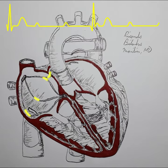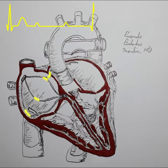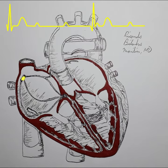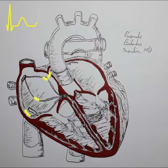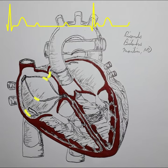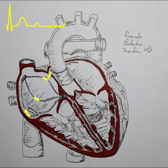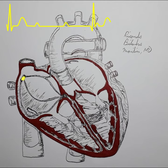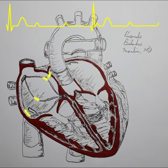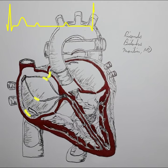Here we can see the P waves causing atrial contraction 90 times per minute simply do not reach the ventricles. The ventricles, therefore, revert to the intrinsic automaticity of the infranodal system, beating 36 times per minute in our example, thus the low heart rate.